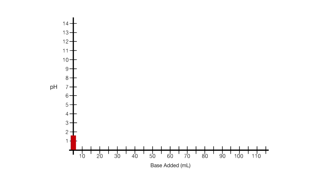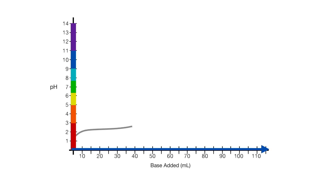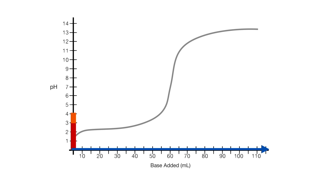Titration curves are formed on graphs with increasing pH on the y-axis and increasing base titrant added on the x-axis. An acid titration curve is characteristically sigmoidal, meaning S-shaped. And remember, a low pH indicates a strong acid and a high pH indicates a strong base.